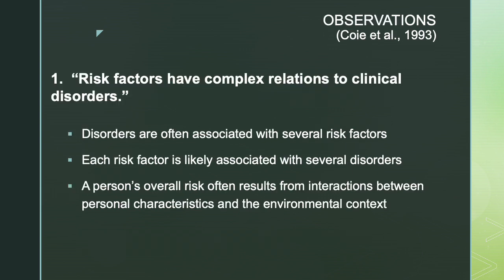Because of the importance of these precursors, Coe et al. go into several main points regarding their observations about risk and protective factors. The first one: risk factors have complex relations to clinical disorders. What they mean by this is that empirical research has suggested that specific disorders are often associated with several risk factors. It is very rare that you have a one-to-one relationship where just one risk factor leads to one adverse outcome — you often have several risk factors converging onto a specific disorder.